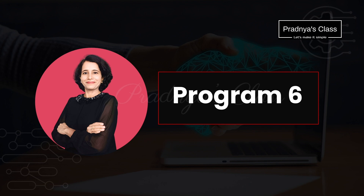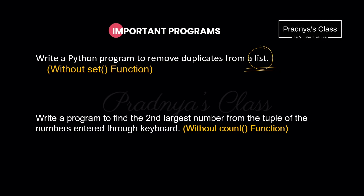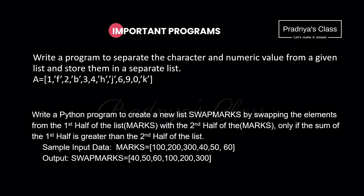With that program I hope you understood the working of the tuple. Tuple is used when the data is fixed — we cannot change the data of the tuple. But if you do need to change it, just convert the tuple to a list, work on the list, and convert it back to a tuple. I am leaving these programs up to you: removing duplicates, finding the second largest number, and other programs we discussed based on list — now you will rewrite them using tuple. If you practice yourself you will get more clarity.